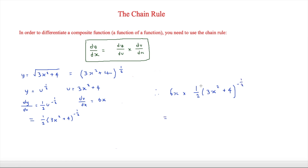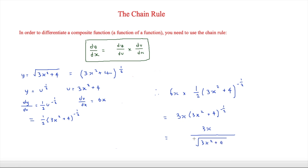Simplifying — one half times 6x gives 3x — so dy over dx equals 3x times (3x squared plus 4) to the minus half. That could be our final answer, but we can simplify one more step. Because the power is negative one half, it can move to the denominator as a square root. So the final simplified form is 3x over the square root of (3x squared plus 4).